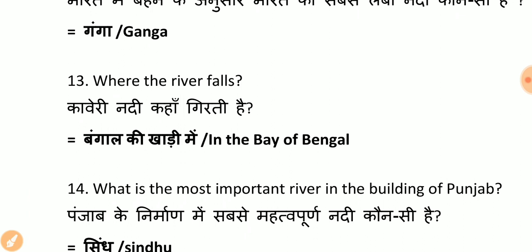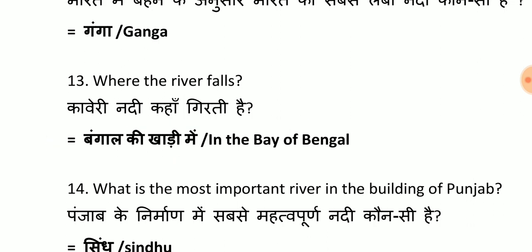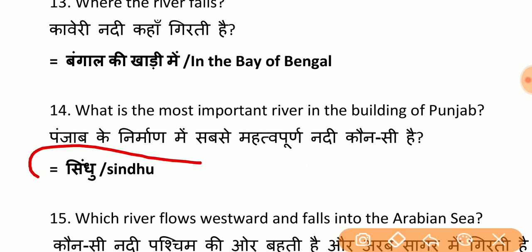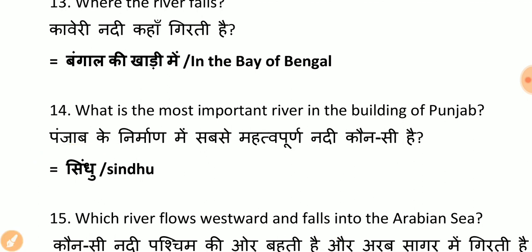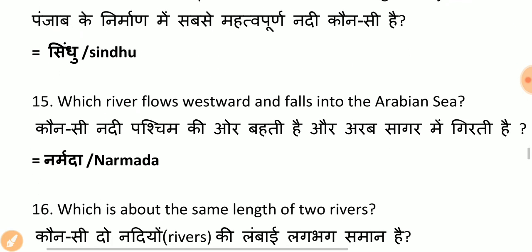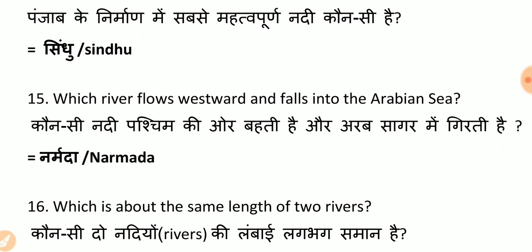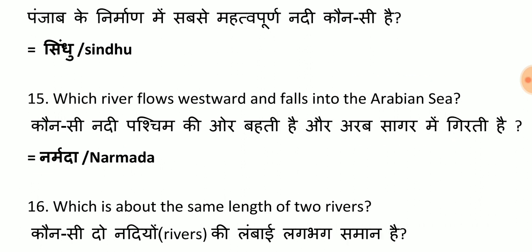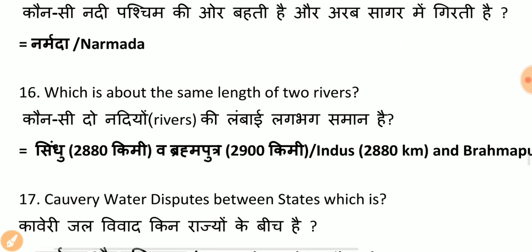Where does the river Kaveri fall? The correct answer is the Bay of Bengal. Narmada river flows westward and falls into the Arabian Sea. Remember this question — it has been asked repeatedly. Which river flows westward and falls into the Arabian Sea? The answer is Narmada river.